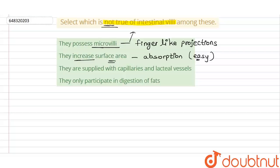The third statement is that they are supplied with capillaries and lacteal vessels — this is also true. The lacteal vessel is a lymph vessel, part of the lymphatic system. So the intestinal villi are supplied with both capillaries and lymph vessels. The third statement is also true.